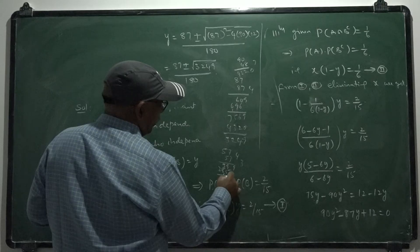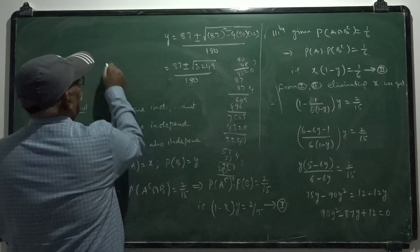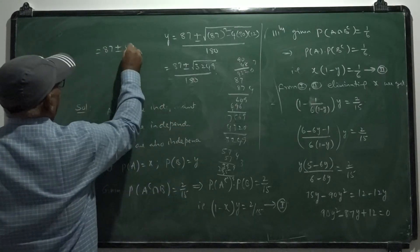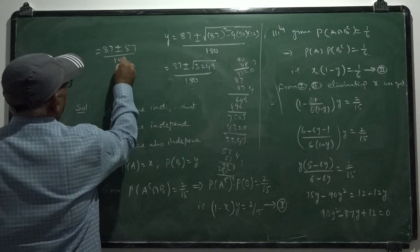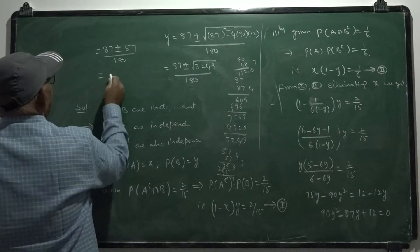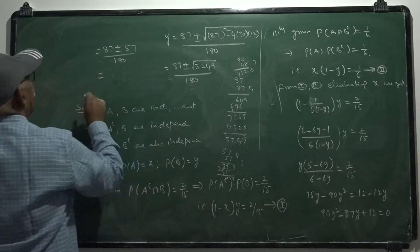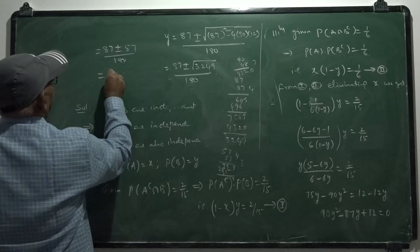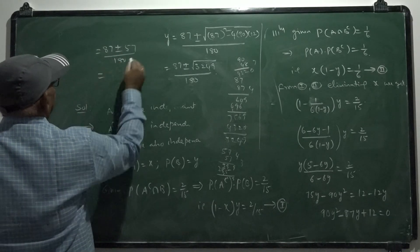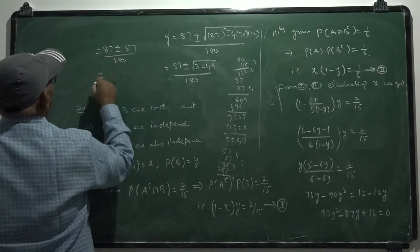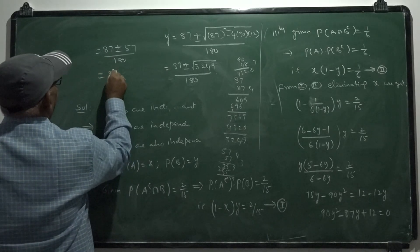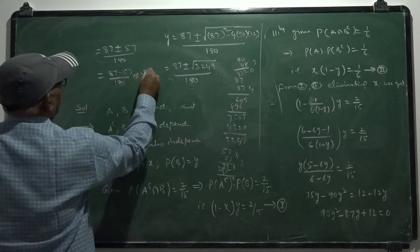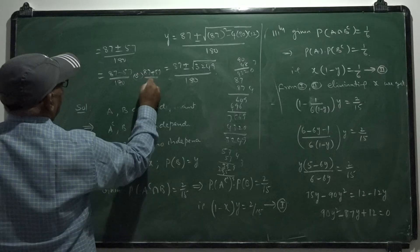So Y equals 87 plus or minus 57 by 180. Taking both signs: we get 30 by 180, which is 1 by 6, or 144 by 180, which is 4 by 5. Since Y must be positive and less than 1, both values are valid.